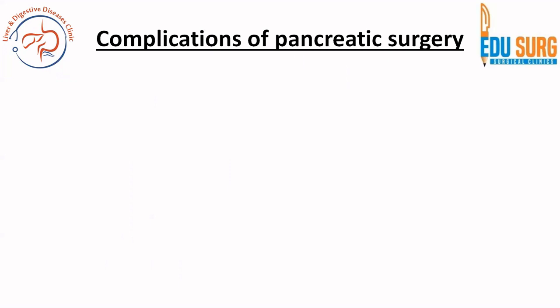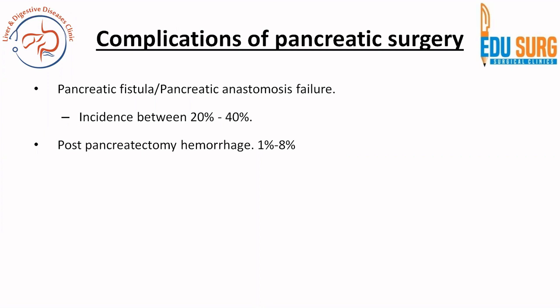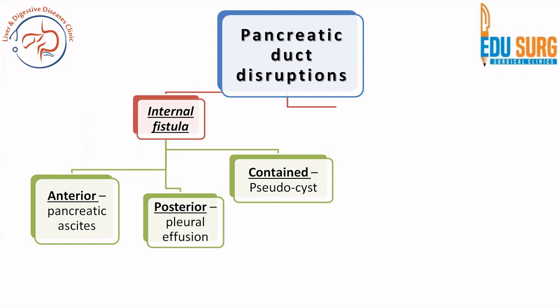Pancreatic surgery is complex and the incidence of complications can be in the range of 3 to 5 percent. Pancreatic fistula or pancreatic anastomotic failure rates are close to 20 percent, with pancreatic occlusion failure rates of up to 30 to 40 percent historically and 10 to 20 percent in recent studies. Post-pancreatectomy hemorrhage is seen in 1 to 8 percent of cases and most of these cases will also have a pancreatic fistula. Delayed gastric emptying is seen in 20 to 50 percent of patients. Other complications include biliary fistula, post-pancreatectomy acute pancreatitis, and intra-abdominal collection.